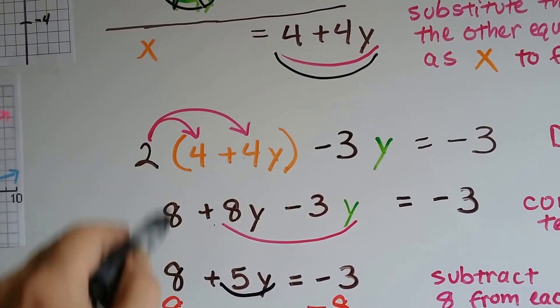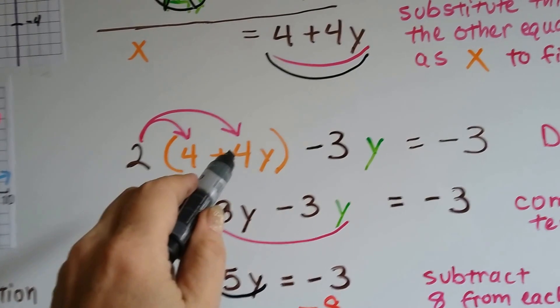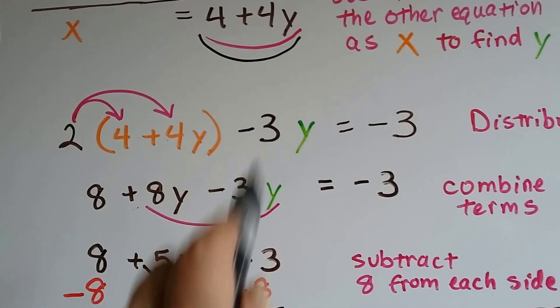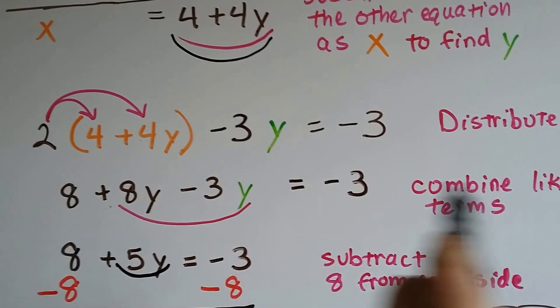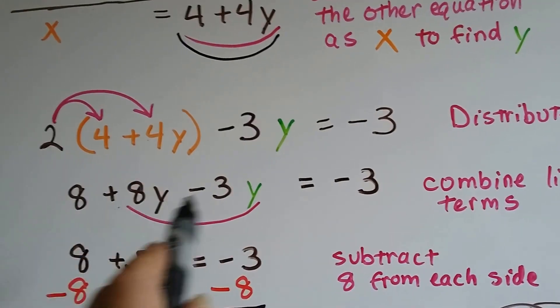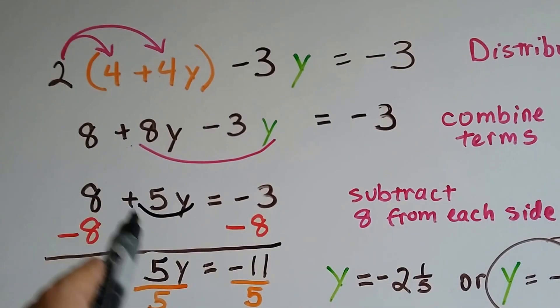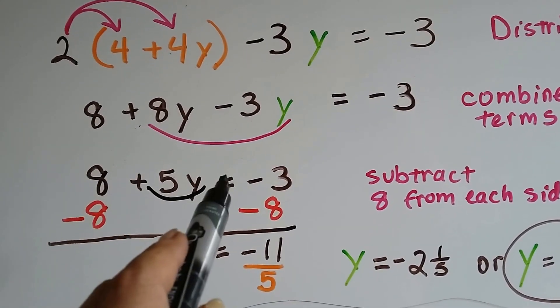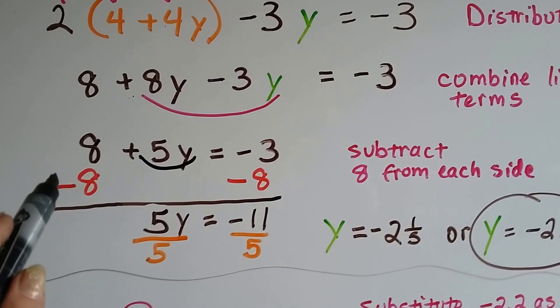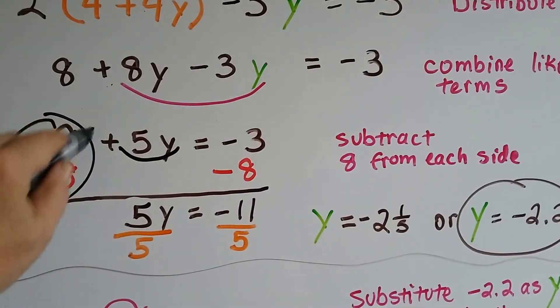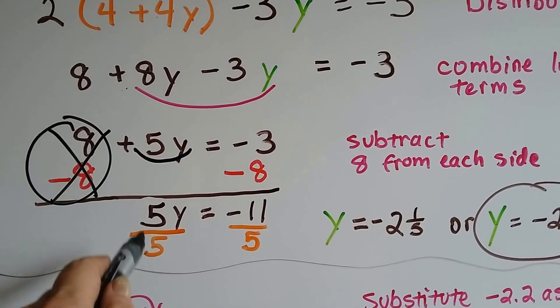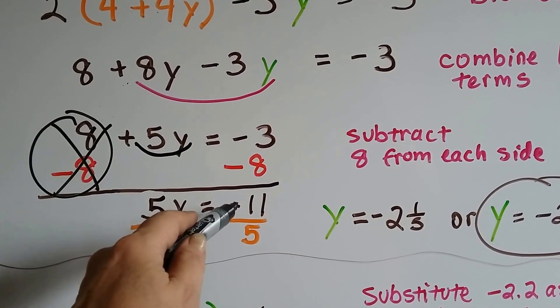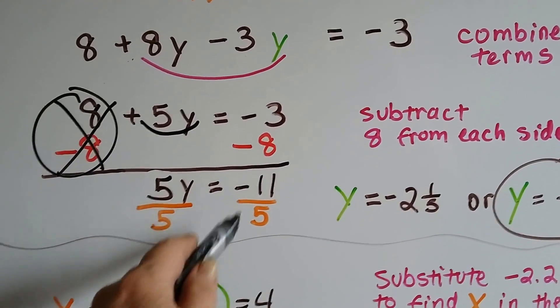2 times 4 is 8, and 2 times 4y is 8y using the distributive property. And we drop these guys down. Now we can combine the like terms because I see 8y and 3y. That's going to give us a 5y. Now we've got 8 plus 5y equals negative 3. So we could subtract 8 from each side. That's going to get rid of that one. And now we've got 5y equals negative 3 minus 8 is a negative 11.